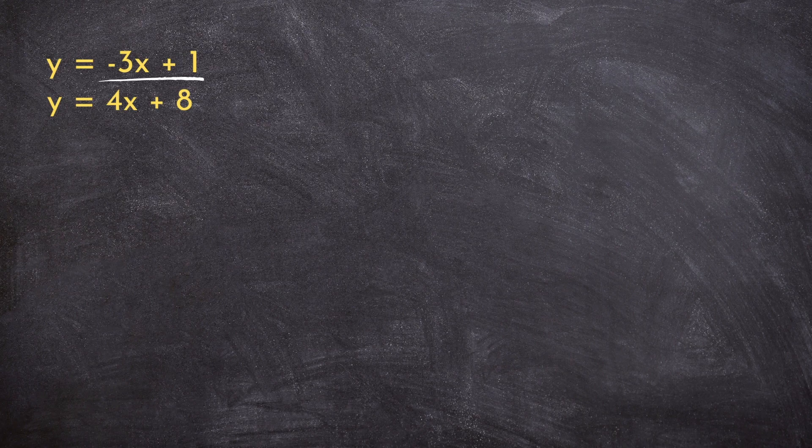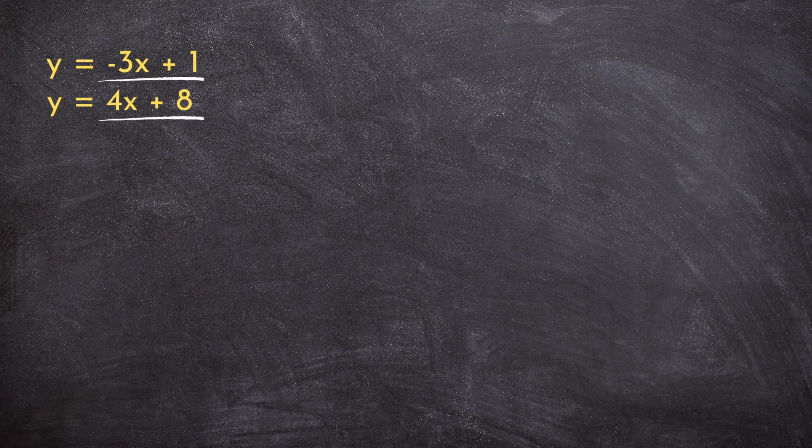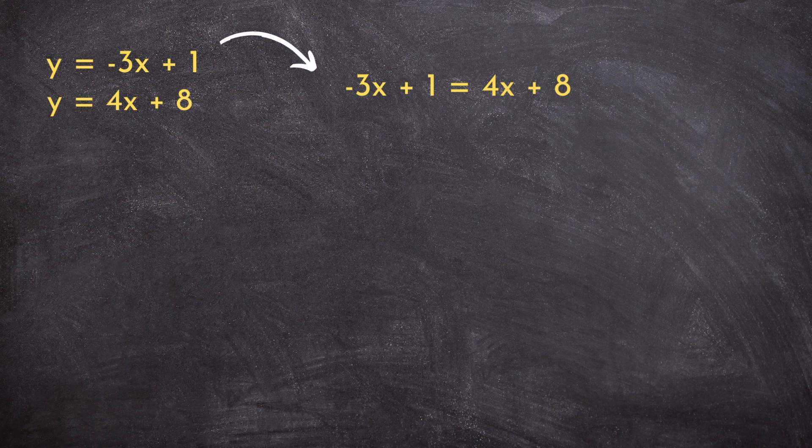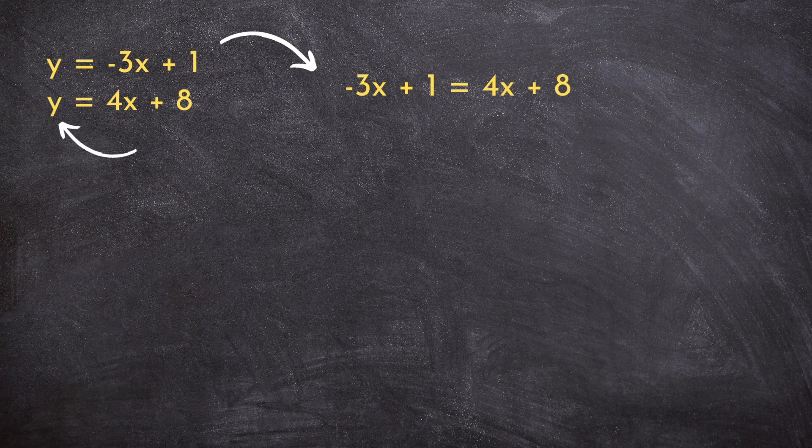Since this expression is equal to y, and this expression is equal to y, we can set these two expressions equal to each other. Think of it as subbing this y into that y. And when we do that, we have an equation with only x's in it.